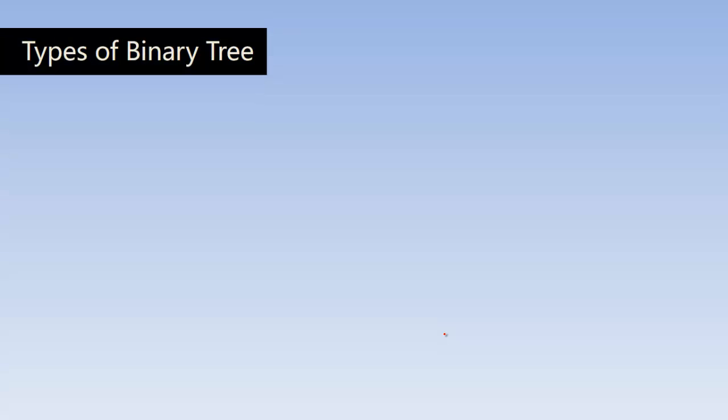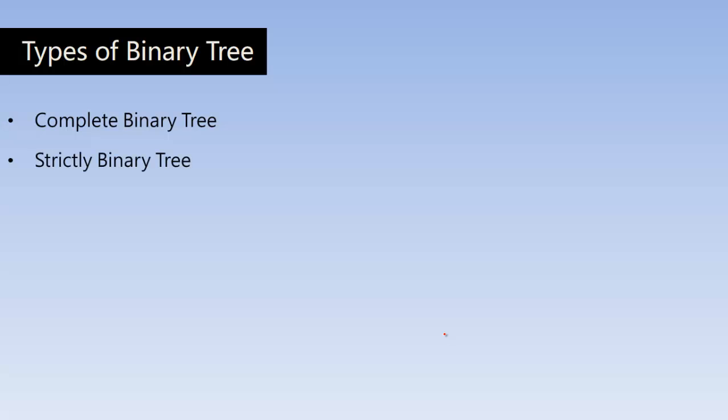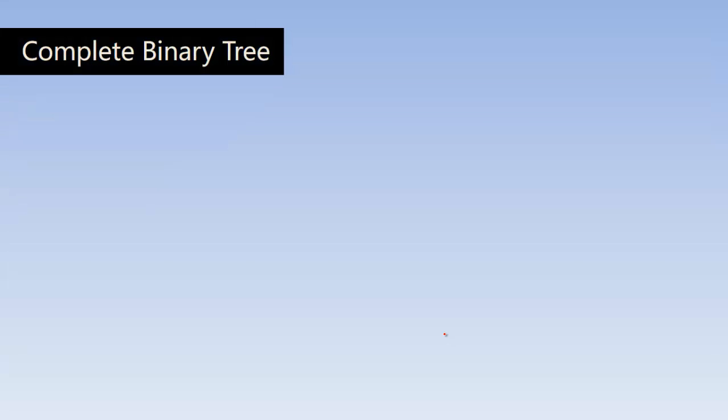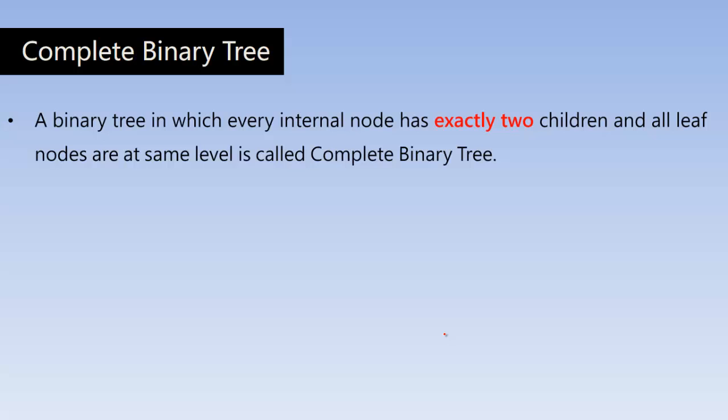Now let us understand what are the different types we can have in a binary tree. A complete binary tree is one form, along with a strictly binary tree and an extended binary tree. A binary tree in which every internal node — that means non-leaf nodes — has exactly two children, and all leaf nodes are at the same level, is called a complete binary tree.